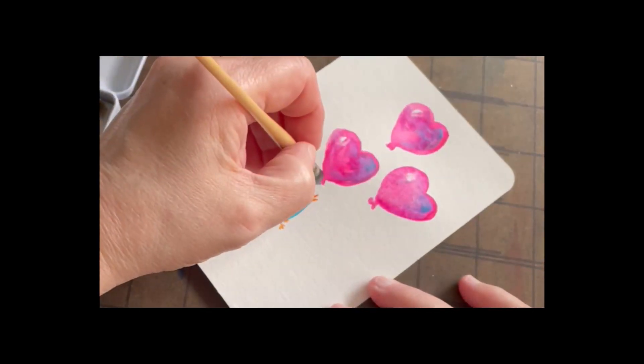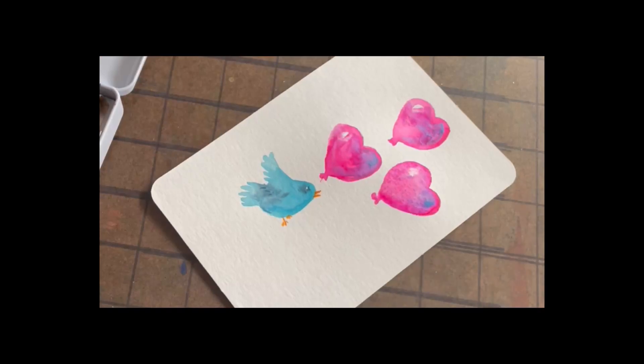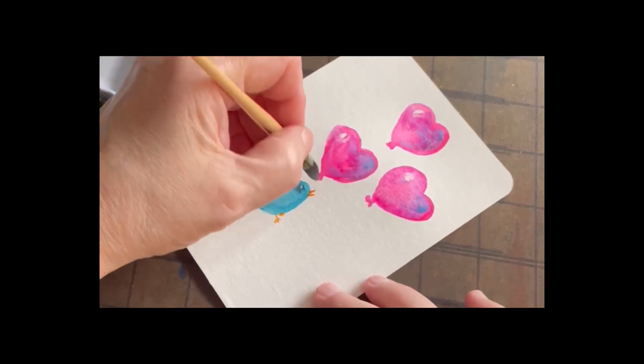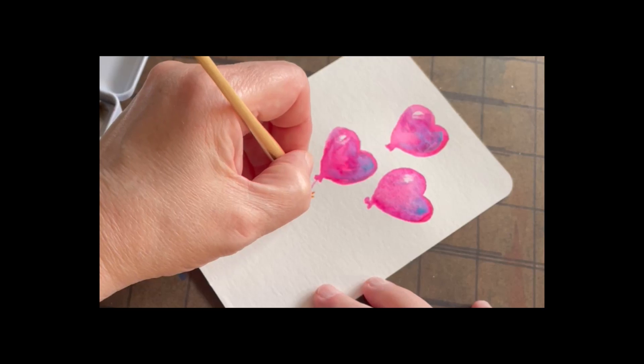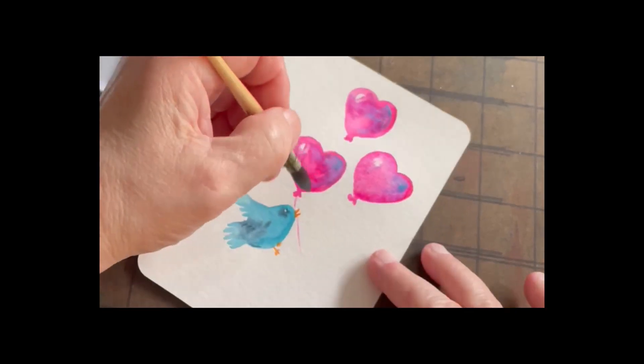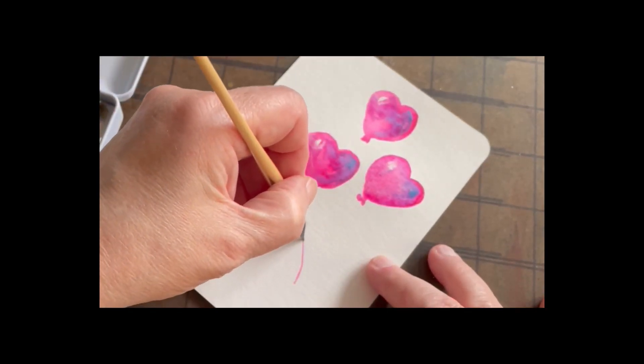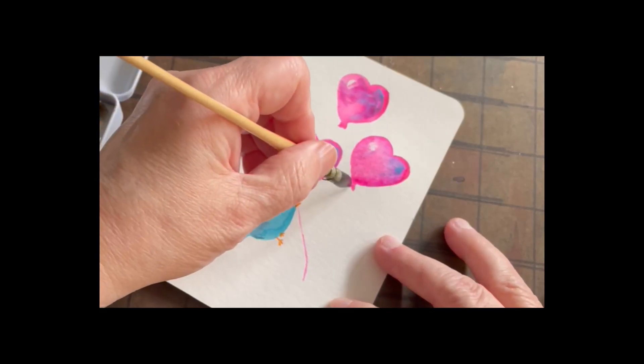Now I'll blot my brush so it's not too watery and pick up just a little bit of the Opus to draw these strings and pull them down. I don't want them to be real distinct.